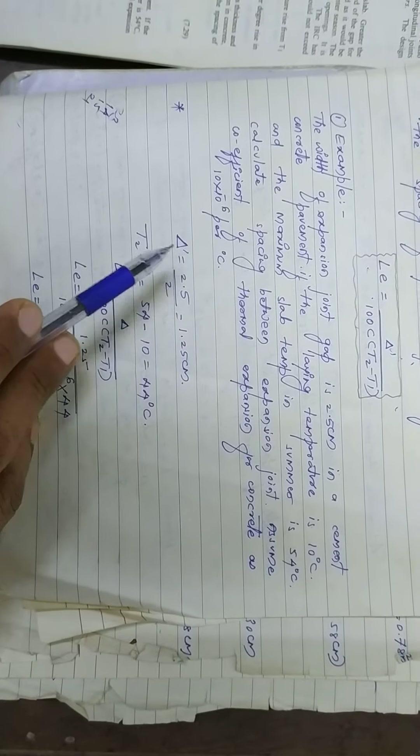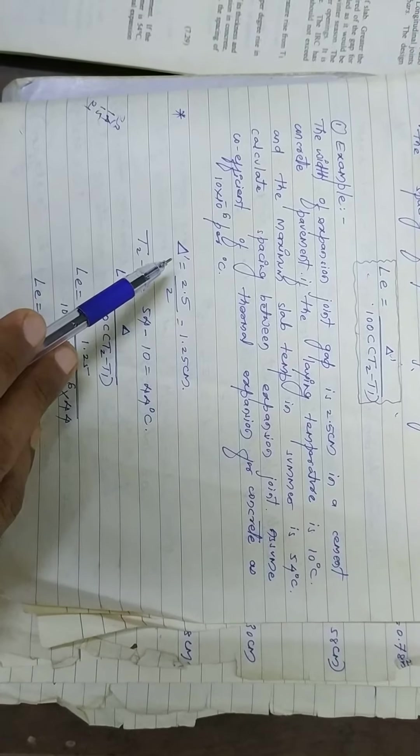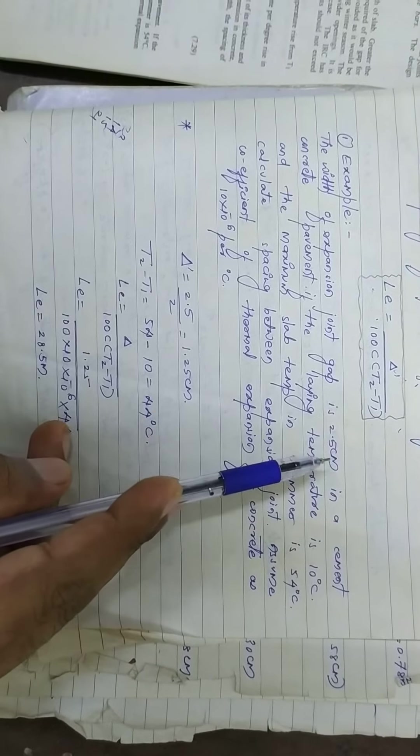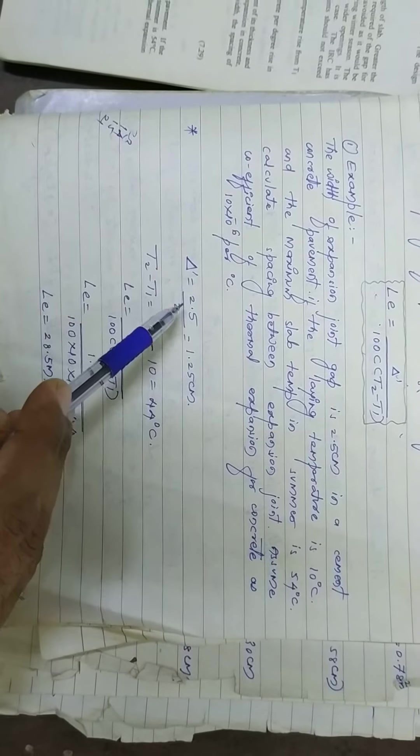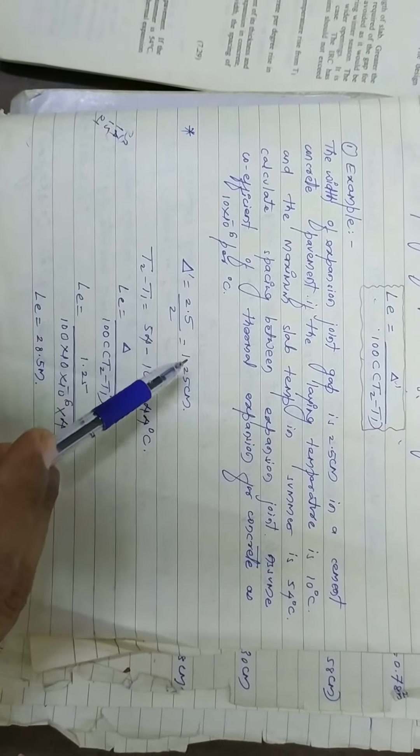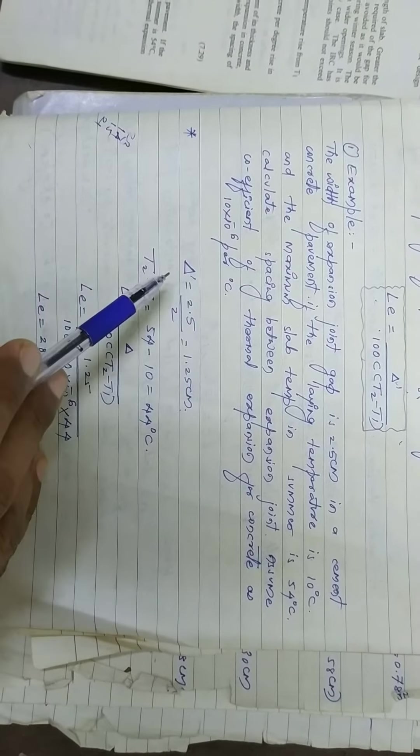So delta dash is nothing but here the expansion joint is 2.5 cm, that is half of that. So 2.5 divided by 2 is 1.25 cm, that is delta dash.